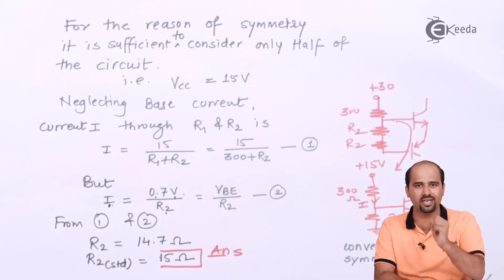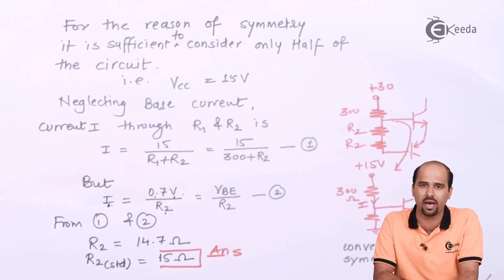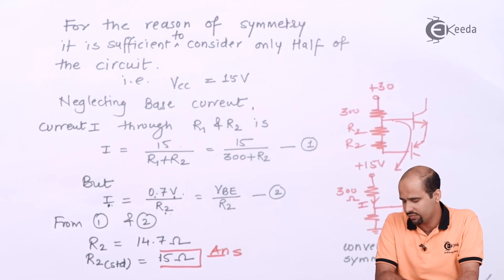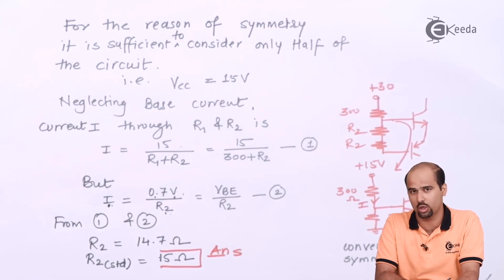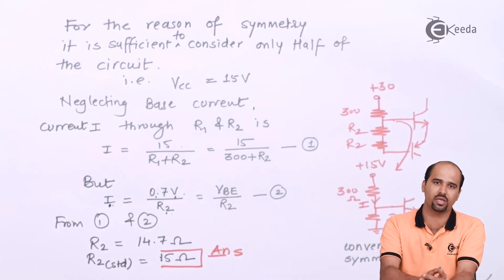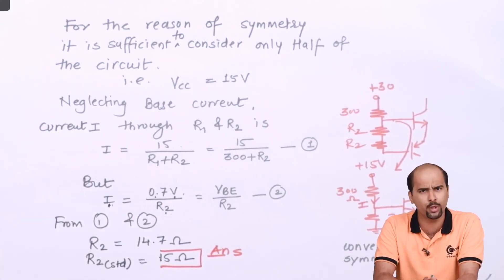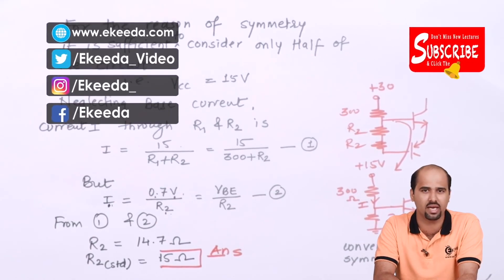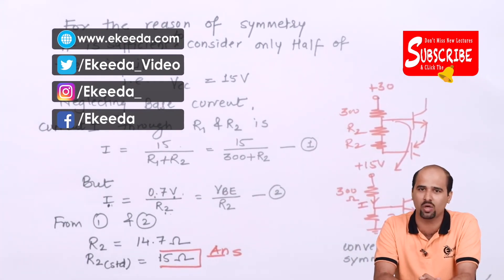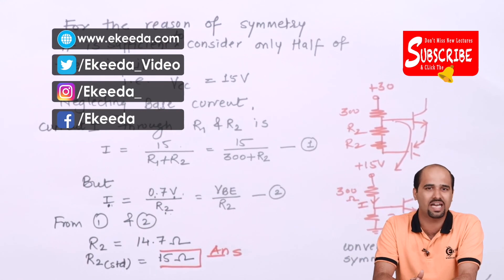I will enhance this particular value because it is not possible to get exactly 14.7 ohm in the market. So I will standardize this value according to market availability: the standard value of R2 will become 15 ohm. This is the resistance value required according to this numerical. Thank you so much for watching. I hope you have understood this design. We will come with another design for a Class C power amplifier, so stay tuned. Learn more EDC along with me and Ikida Videos — subscribe to the Ikida channel.